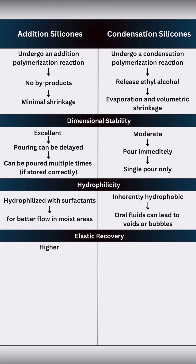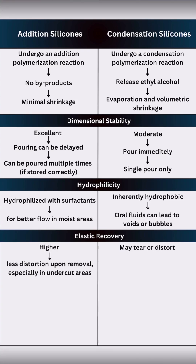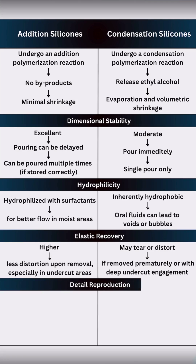Addition silicones have higher elastic recovery, so they resist distortion even when removed from undercuts. Condensation silicones may tear or distort if removed prematurely or with deep undercut engagement.